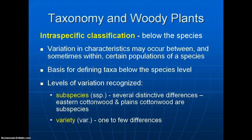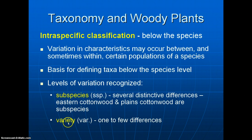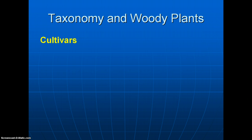Two common categories below species are subspecies, abbreviated SSP, which have several distinctive differences — for example, eastern cottonwood and plains cottonwood are considered subspecies of the cottonwood — and the botanical variety, where there are only one to a few differences. For example, the chokecherry variety melanocarpa is the black-fruited chokecherry; the variety name melanocarpa tells you it has black fruit instead of red.